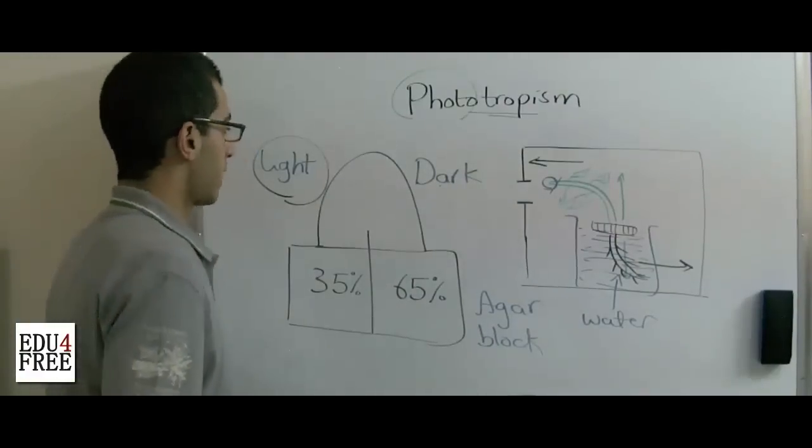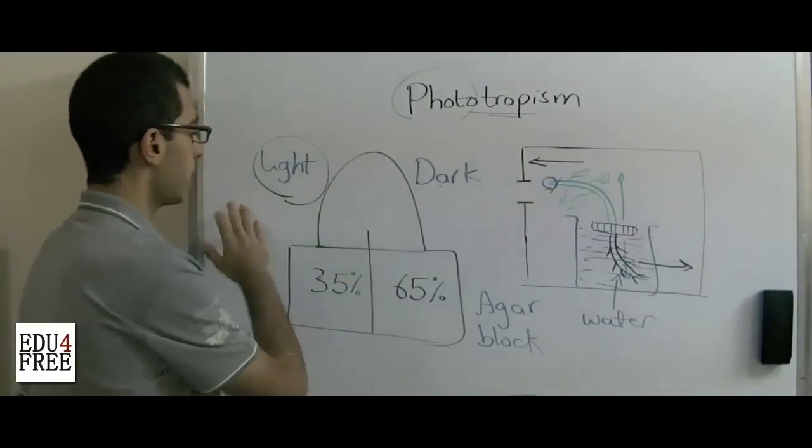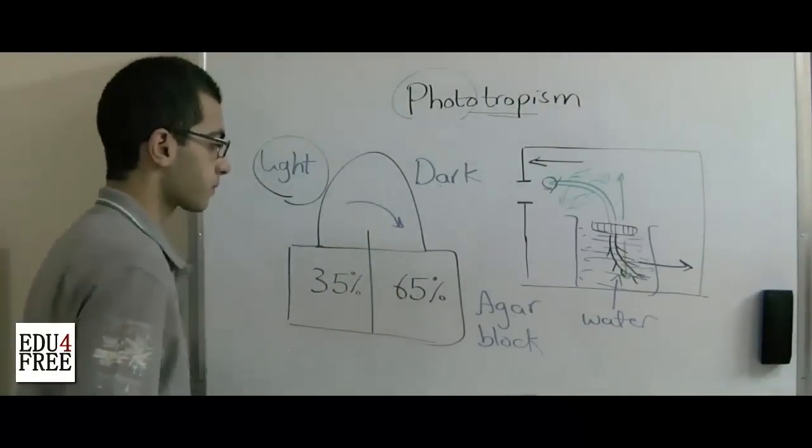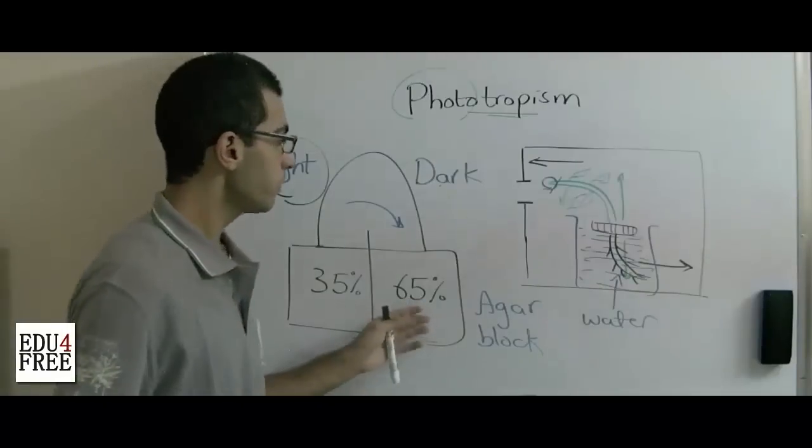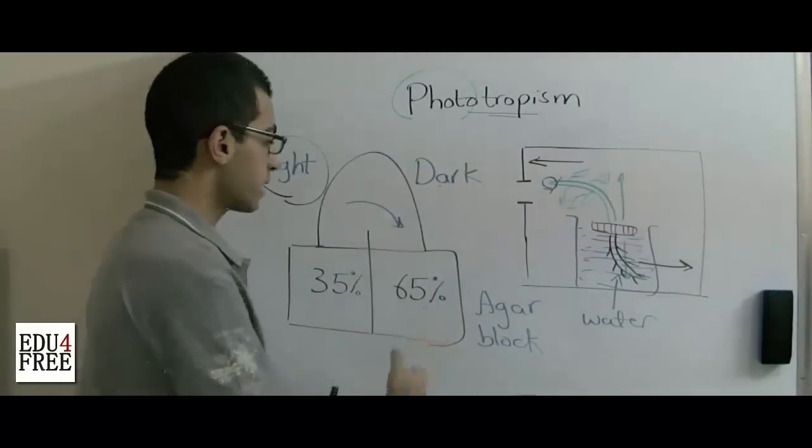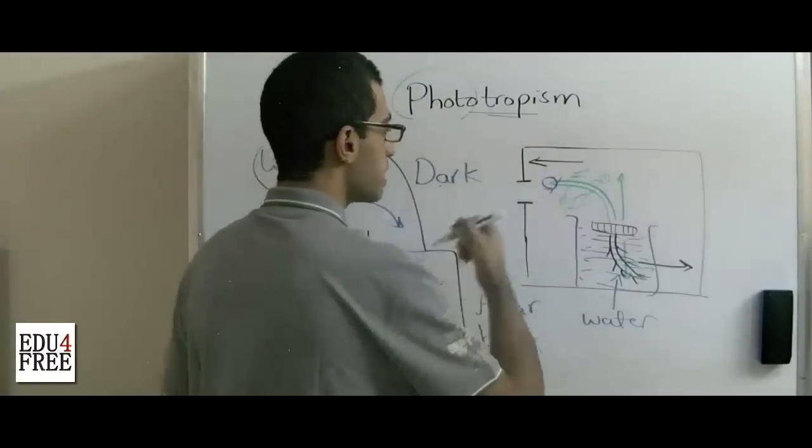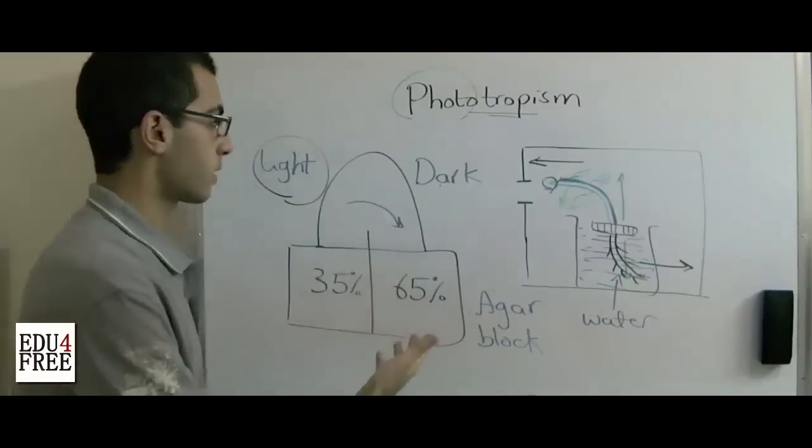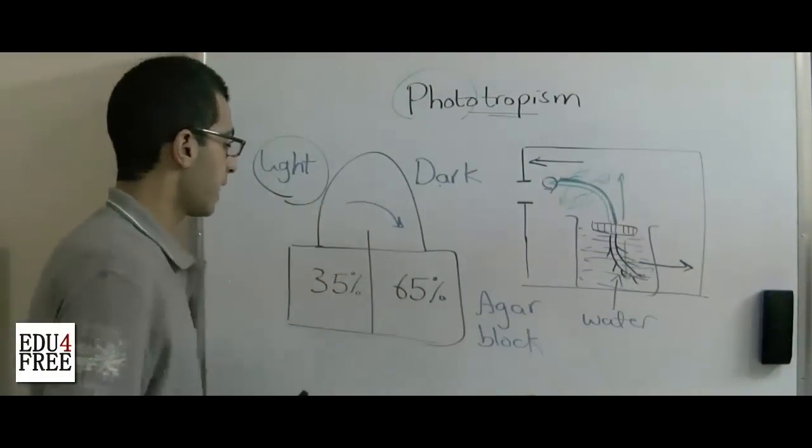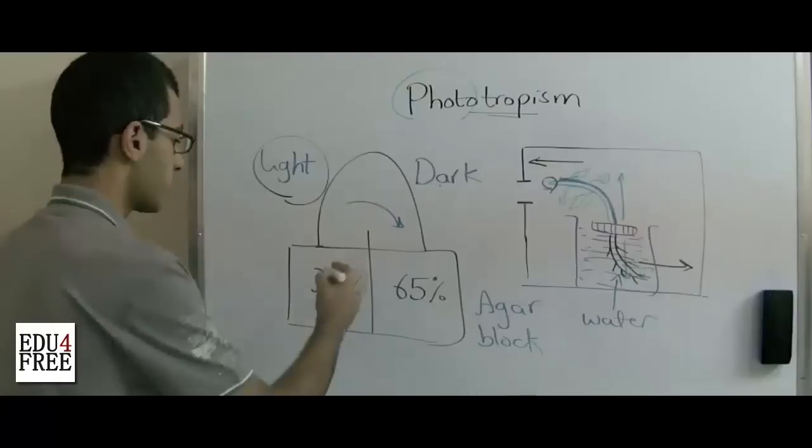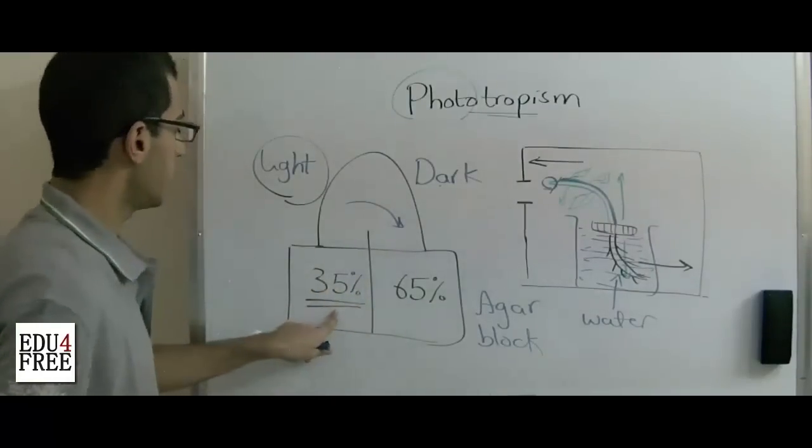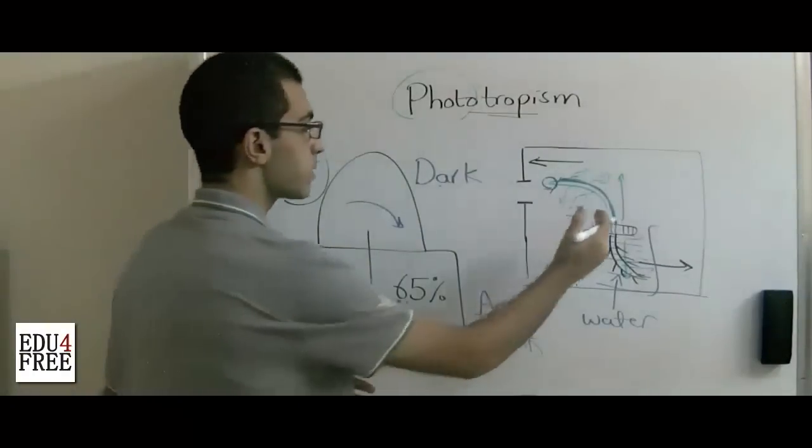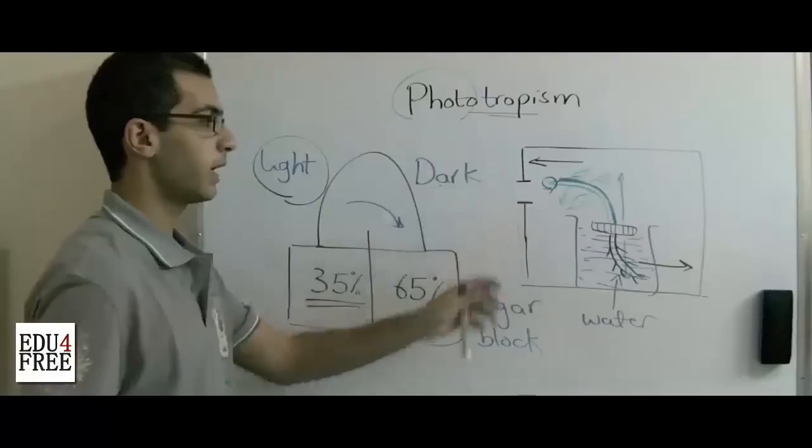So this indicates that when the plant faces the light, the auxins move from the bright side to the dark side. And when they move to the dark side, they increase the ability of cells on this dark side to grow more rapidly. And on the other side, on the 35% side, the growth becomes slower. This leads to the curvature of the plant towards the light.